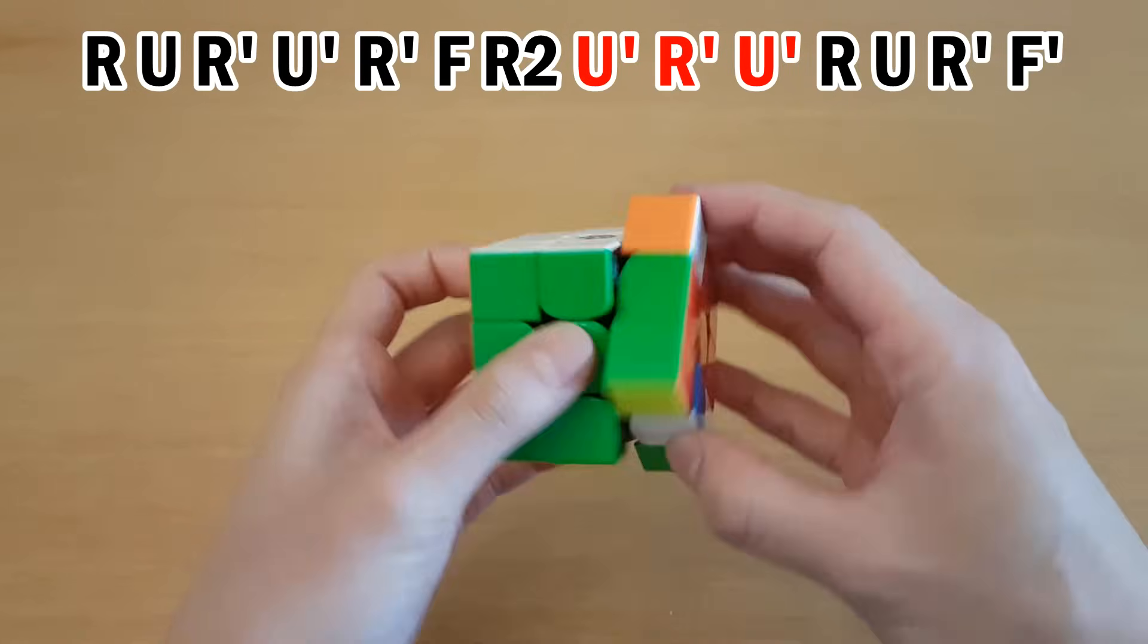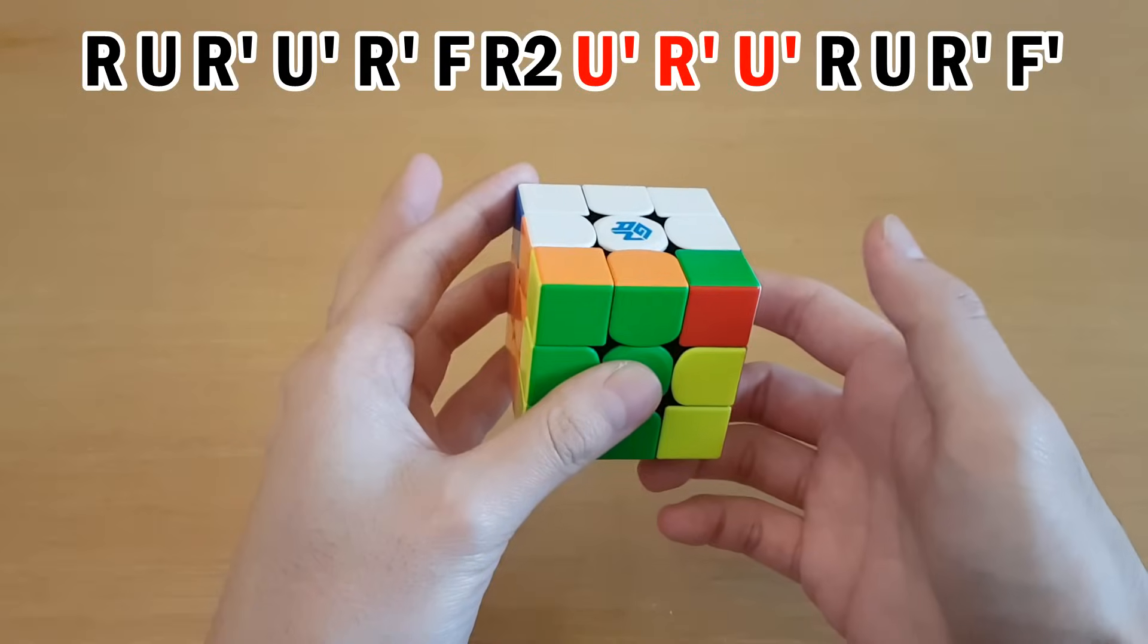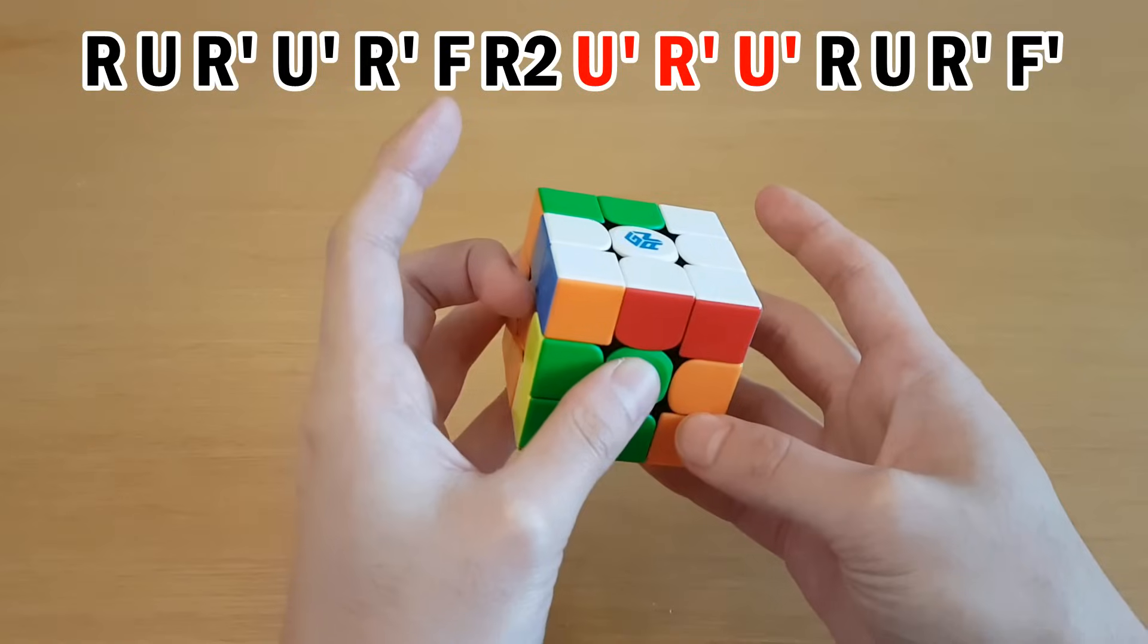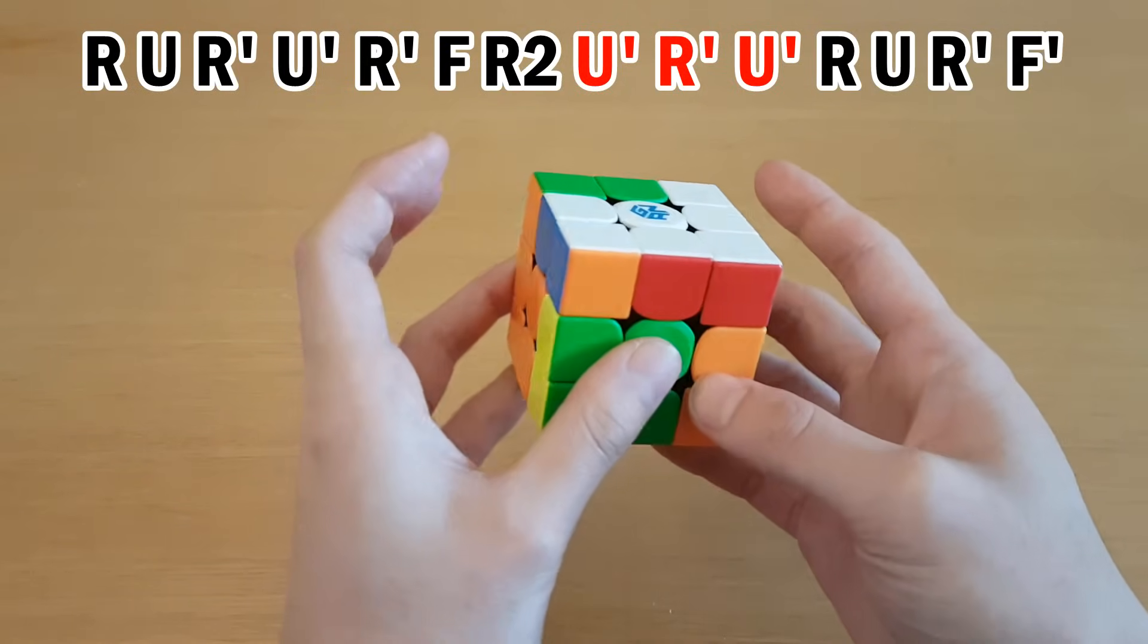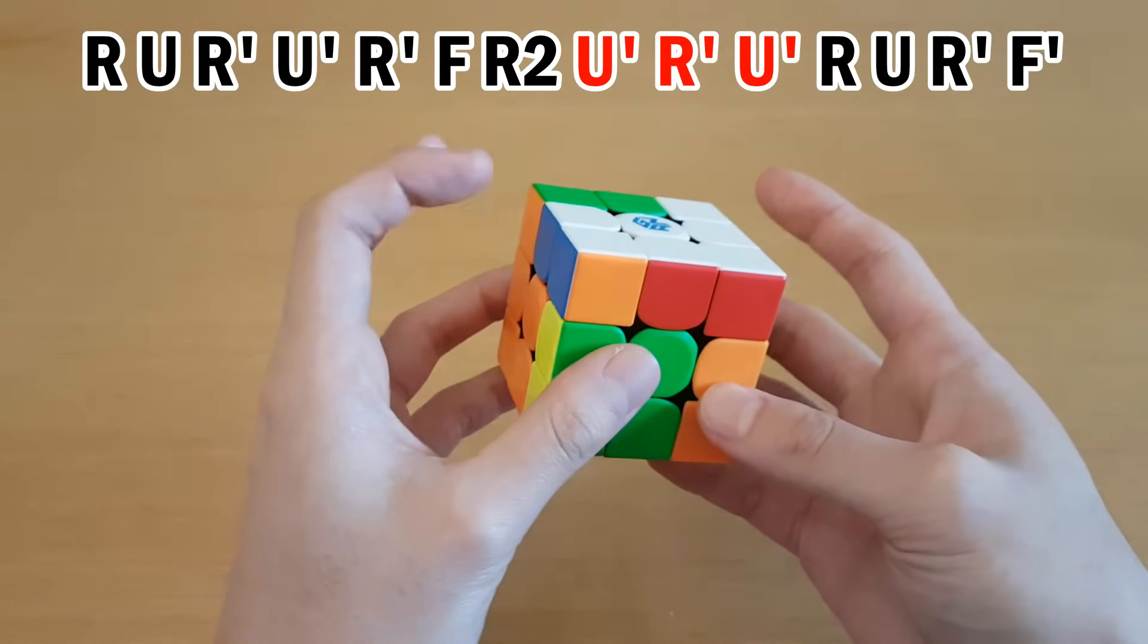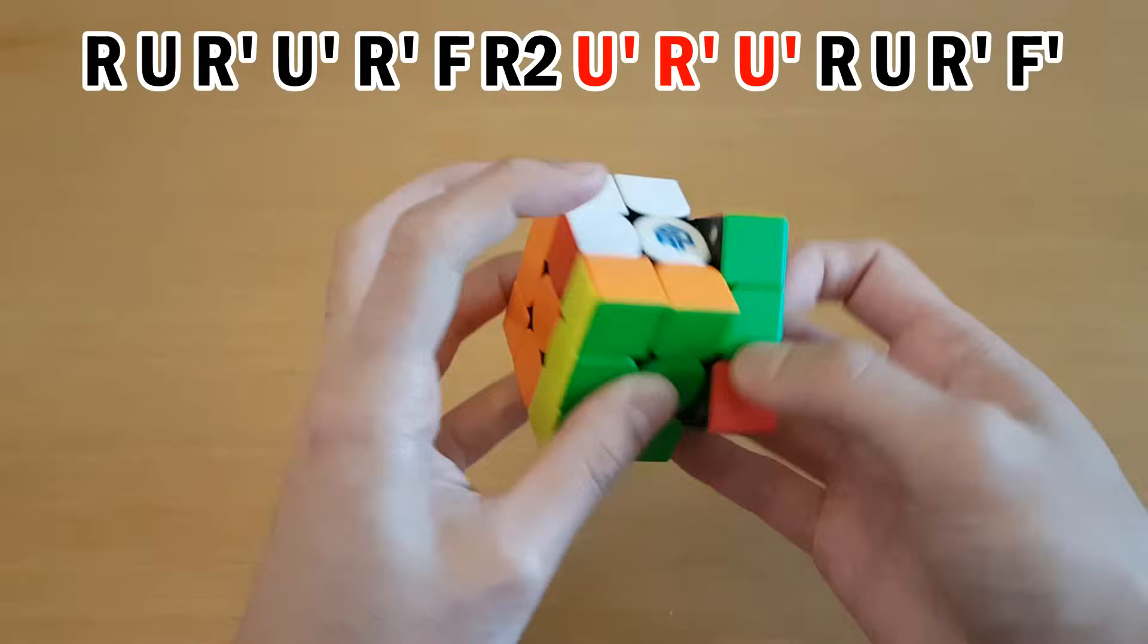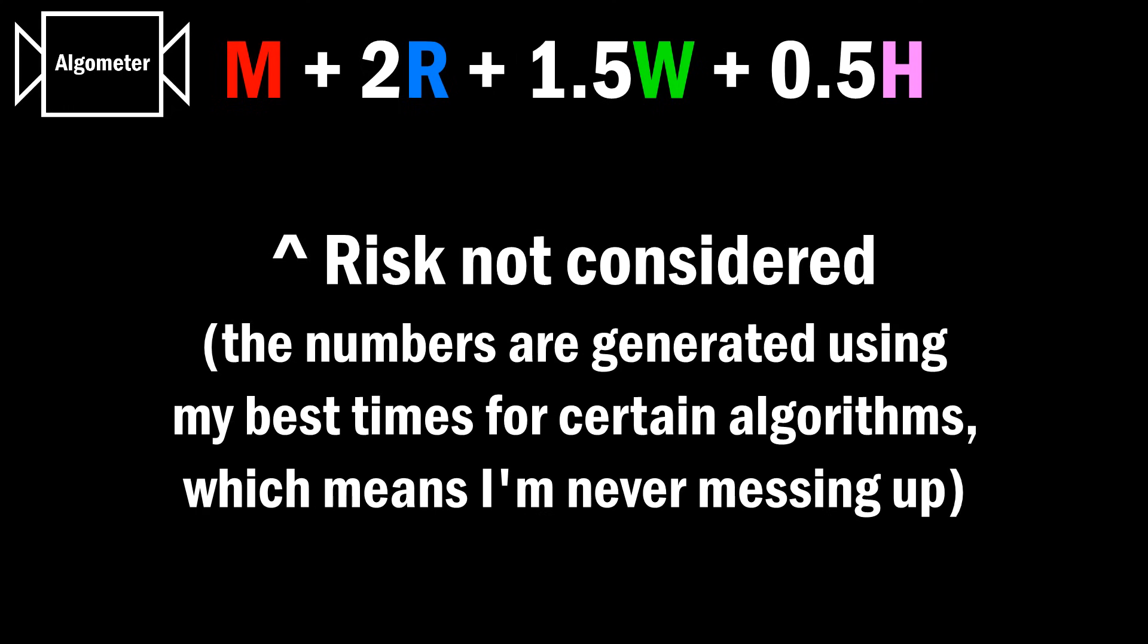Now we're going to talk about something this formula does not take into account, which is risk. For this area in T-perm that I talked about, where you do U-prime, R-prime, U-prime, instead, you can do U-prime with your index finger, R-prime, U-prime with your middle finger. Now this actually completely removes the overworking of finger. However, it does introduce risk into the algorithm because I do find this to be riskier when going very fast compared to just using your index finger twice.